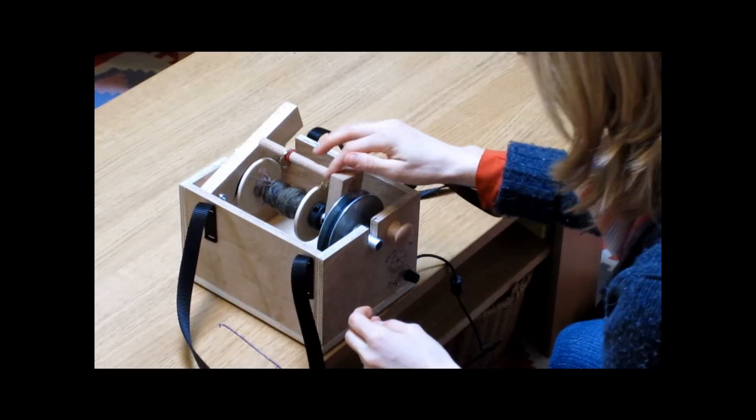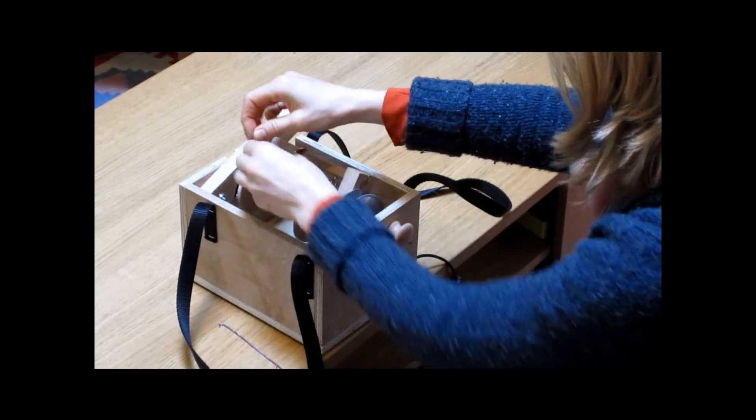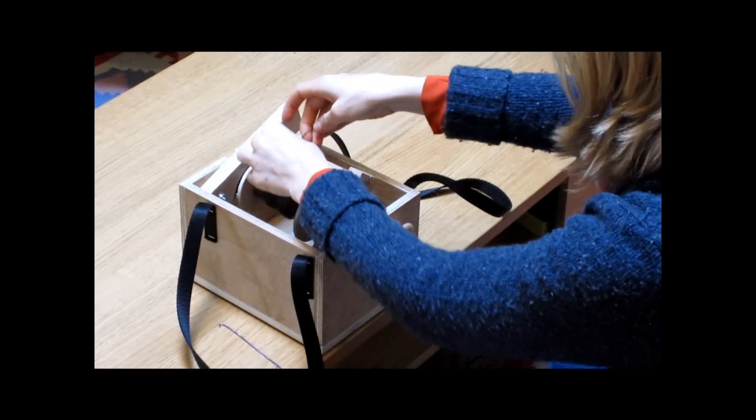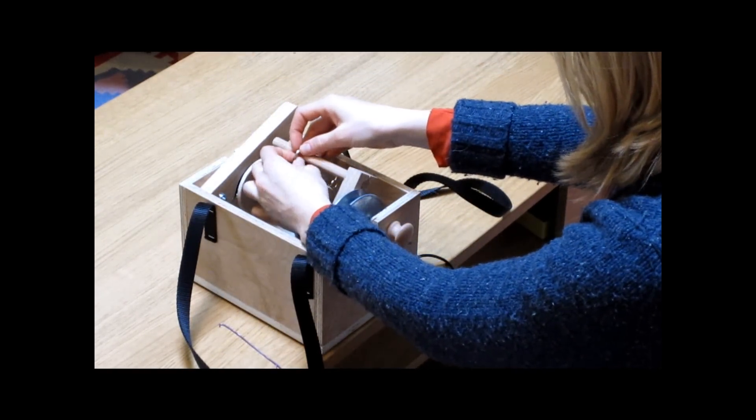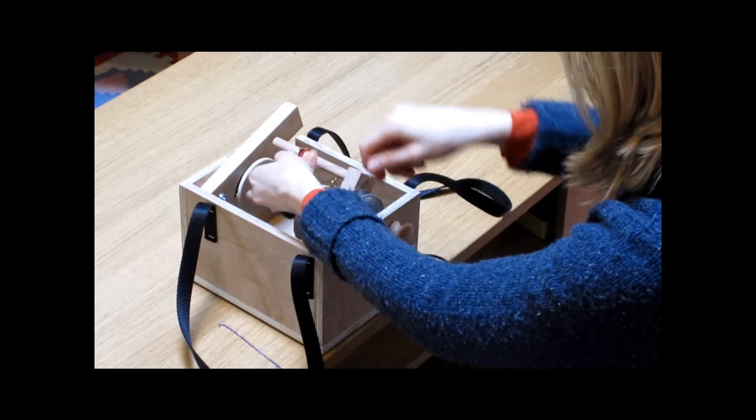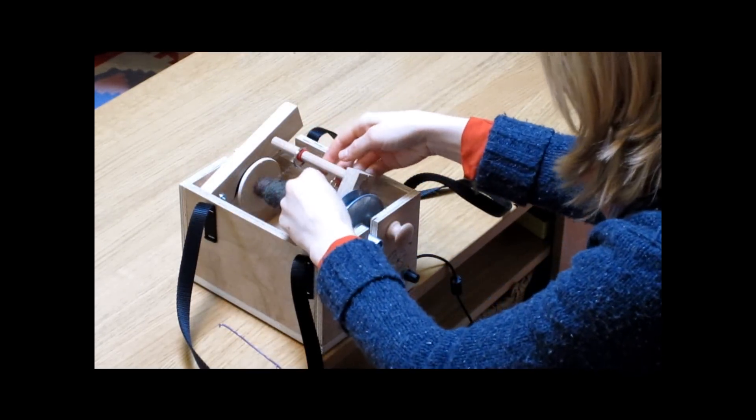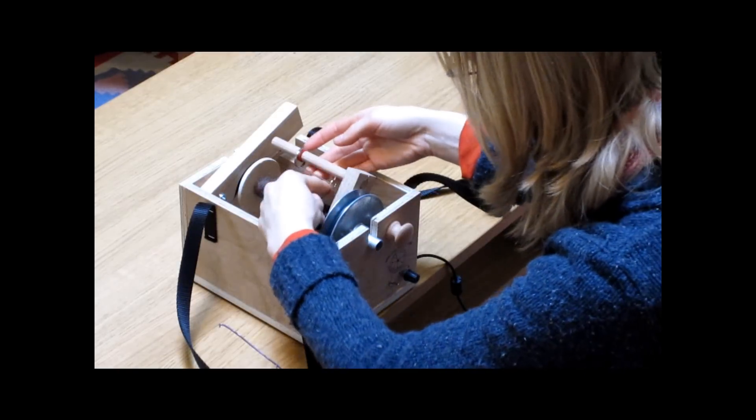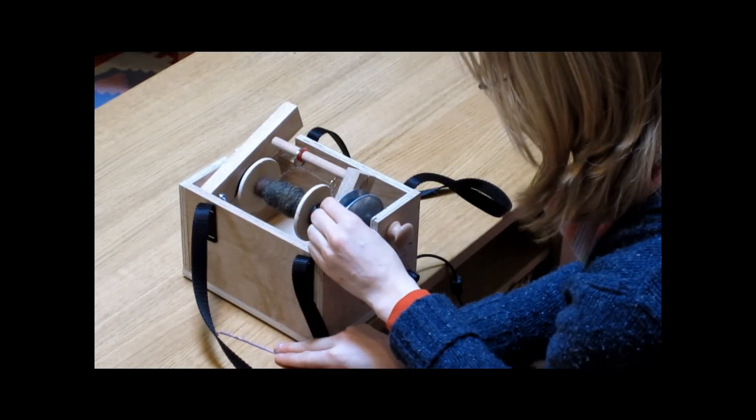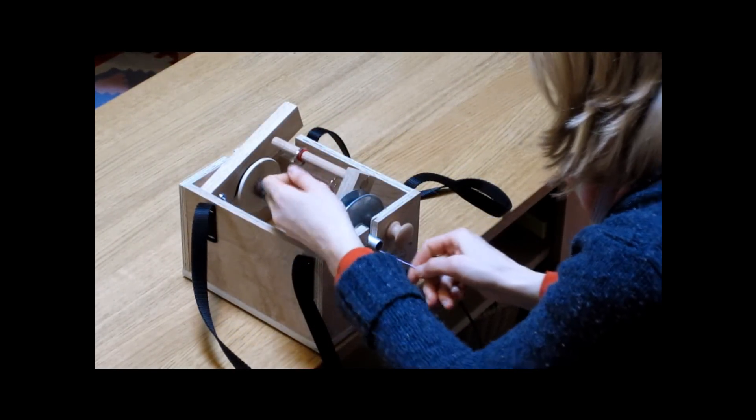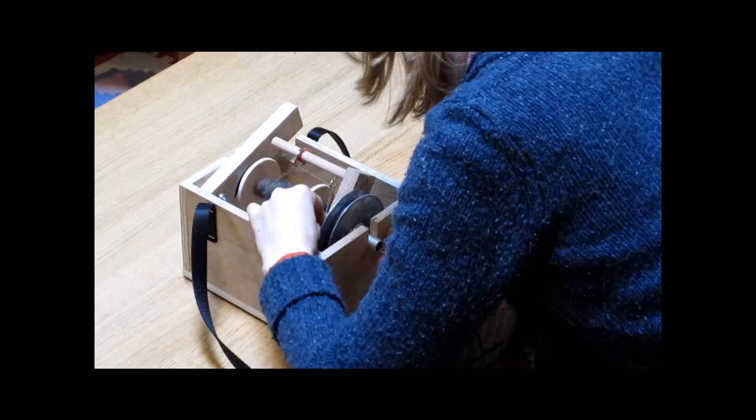This spinning wheel is a scotch tension design and that lever being pressed down controls the tension. The yarn is being threaded through the flyer. That little hook is called an orifice hook and it is used to pull the yarn through that little hole.